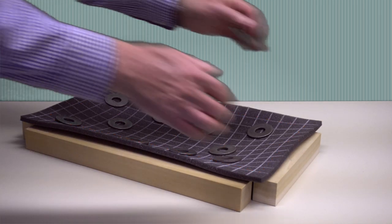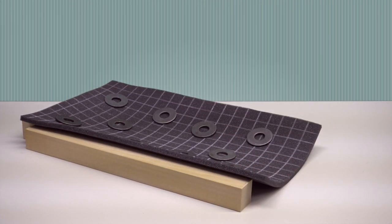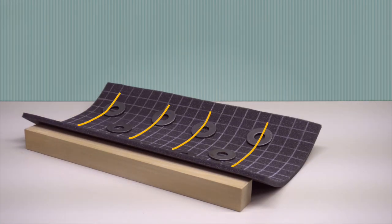If we remove one of the end supports, the plate deflects like this, and removing the other end support produces this result. Notice how bending occurs in only one direction.